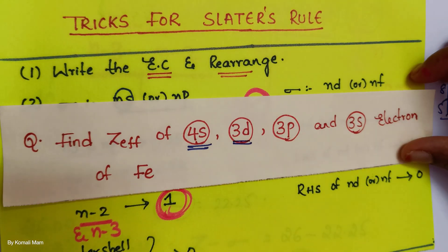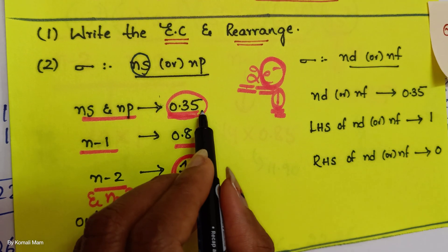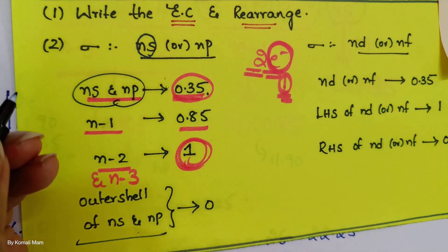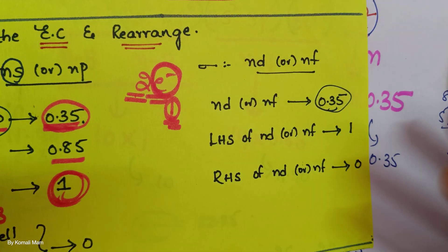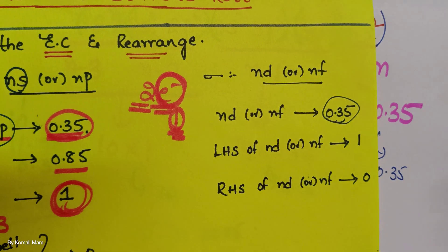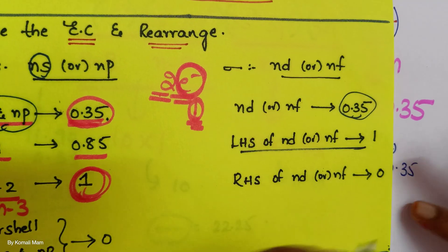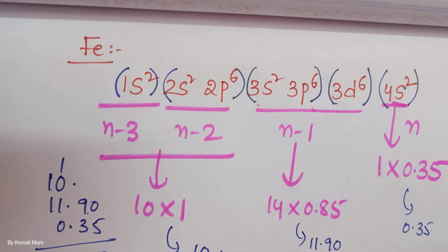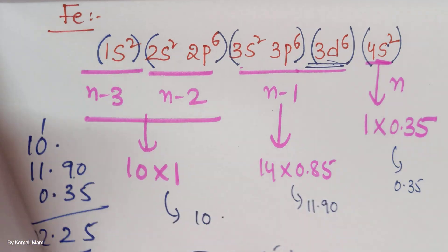Now let us calculate for the 3D electron of iron. The electronic configuration is: 1s², 2s², 2p⁶, 3s², 3p⁶, 3d⁶, 4s². Since we are calculating for 3d, we should not consider the 4s (right-hand side). For a d electron, the rule is: same-group d electrons contribute 0.35. Here n = 3, so the other 5 electrons in 3d contribute 0.35 each: 5 × 0.35 = 1.75.